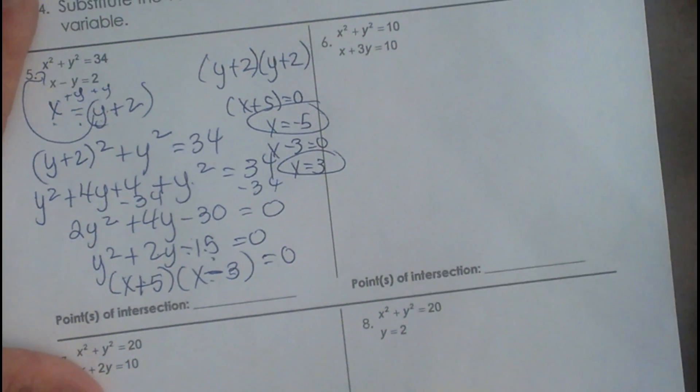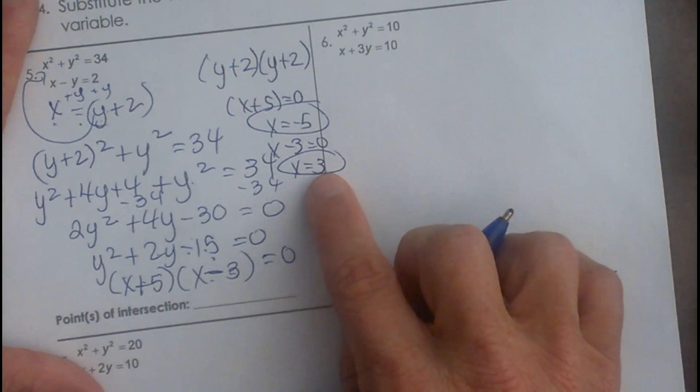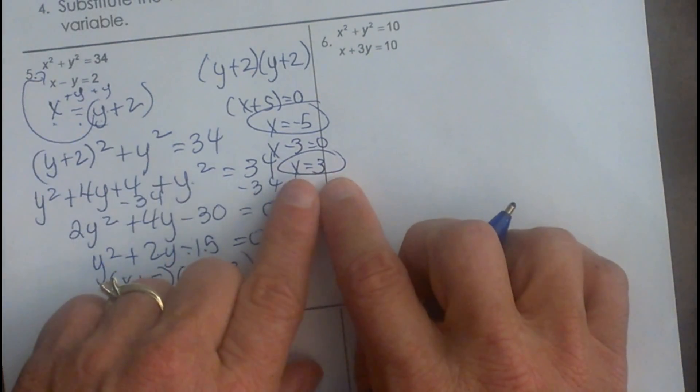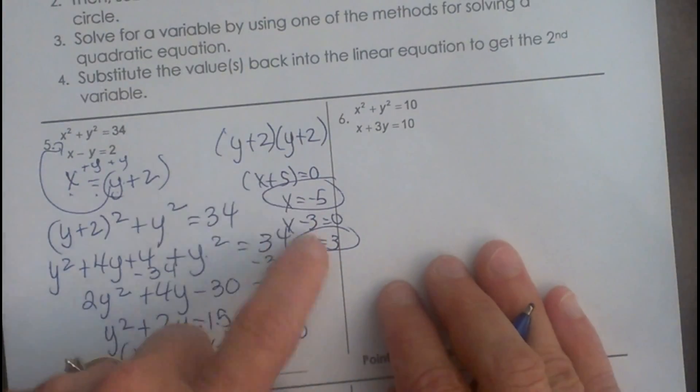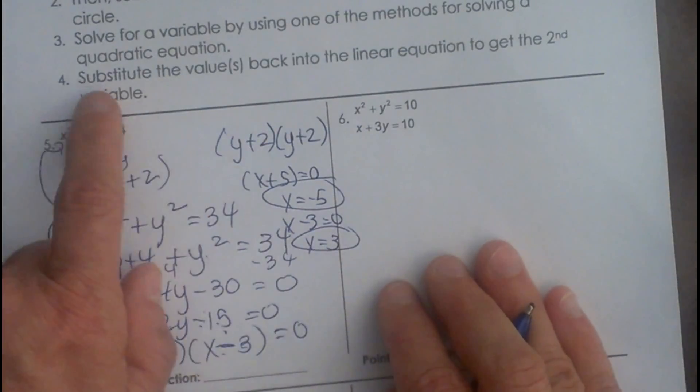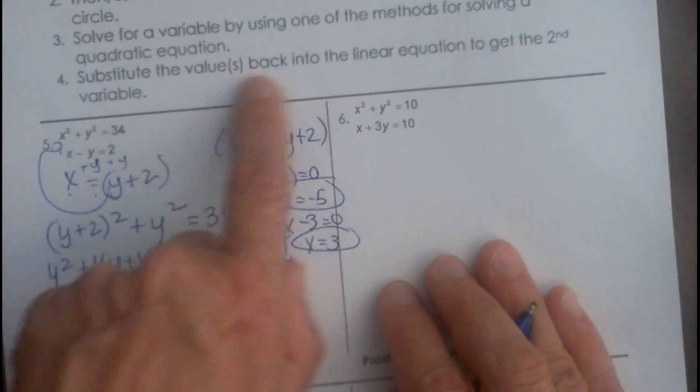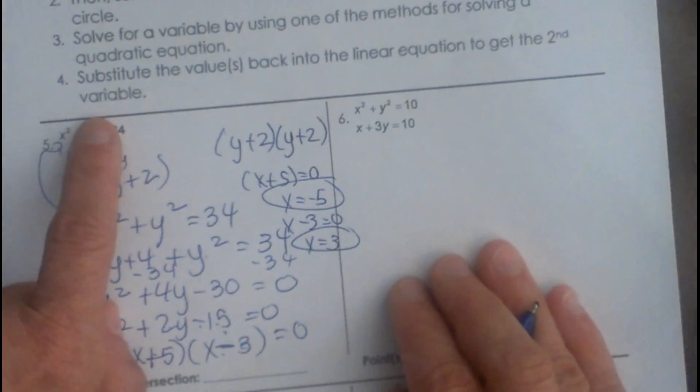Now I'm not done because this is not a point. I need to find the point. So now what I'm going to do is take these, and that's what step 4 up here is. Once you solve the quadratic, you need to substitute the value back into the linear function to get the other variable.